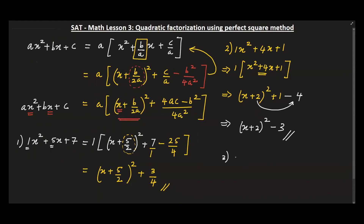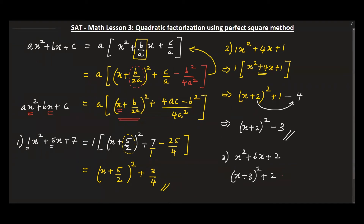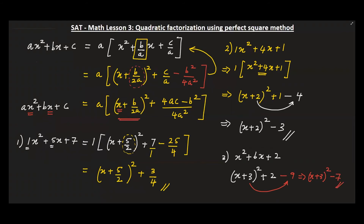Let's take x² + 6x + 2. Now we can directly write this as (x + 3)² — taking half of the 6 — plus 2, and then always minus the square of this, which is 9. So you have (x + 3)² − 7, and that would be the answer to that part.